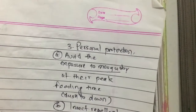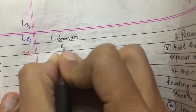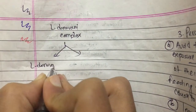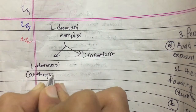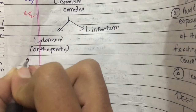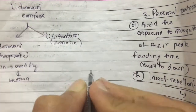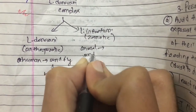Visceral leishmaniasis or kala azar is caused by the Leishmania donovani complex, which comprises two types of Leishmania: Leishmania donovani and Leishmania infantum. Leishmania donovani is anthroponotic — it transmits from human to sandfly back to human — whereas Leishmania infantum is zoonotic and transmits from animal to sandfly to human.